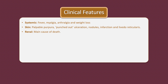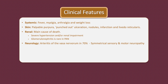Renal involvement is the main cause of death. Severe hypertension and/or renal impairment may occur due to renal artery narrowing, leading to multiple renal infarctions. However, in contrast to microscopic polyangiitis, glomerulonephritis is rare in polyarteritis nodosa. In 70% of patients, arteritis of the vasa nervorum leads to neuropathy, which is typically symmetrical and affects both sensory and motor functions.